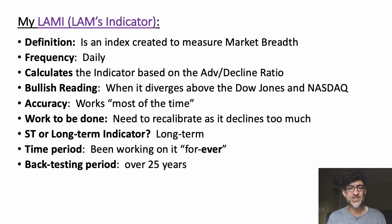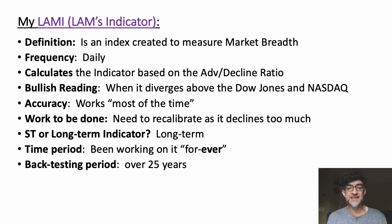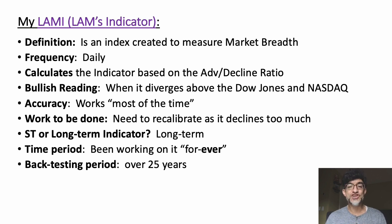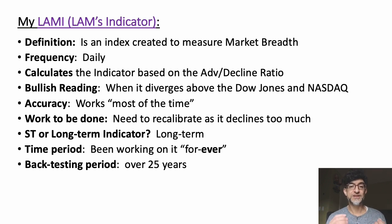With that percentage change, it adds onto the index. So if the index starts out at 100 and advances to declines are 2 to 1 — a lot of advances — that index is going to move from 100 to like 101. The frequency is daily. The bullish reading is if it diverges above the market indices like the Dow Jones, NASDAQ, and S&P. So even if the Dow Jones and S&P are crashing but the indicator index is flat, that's a good sign. You want to see divergence rather than the absolute number.